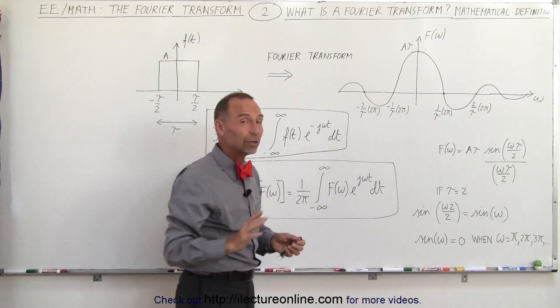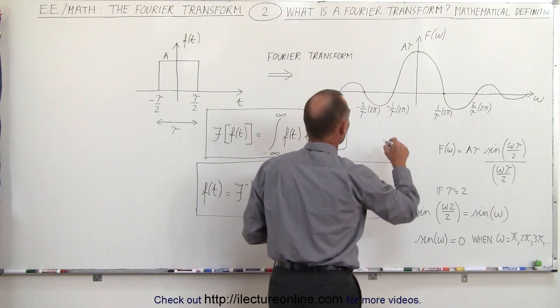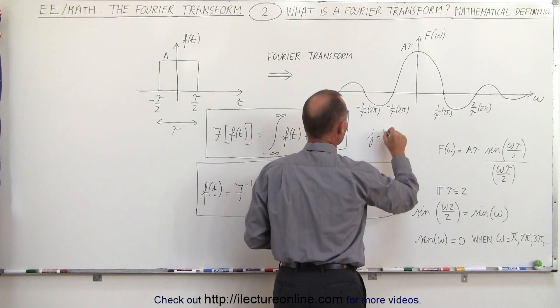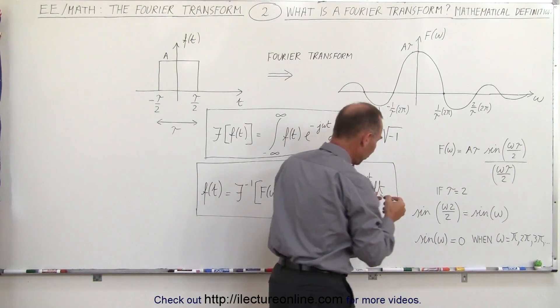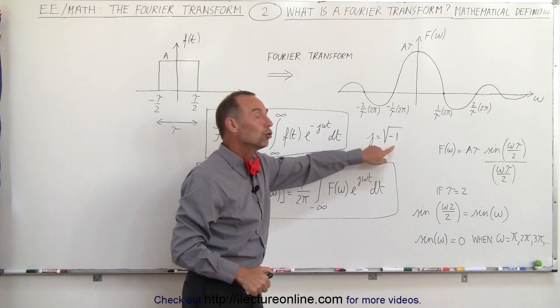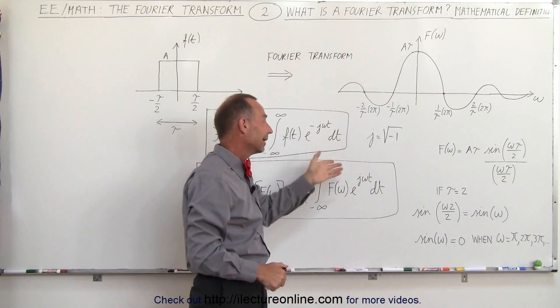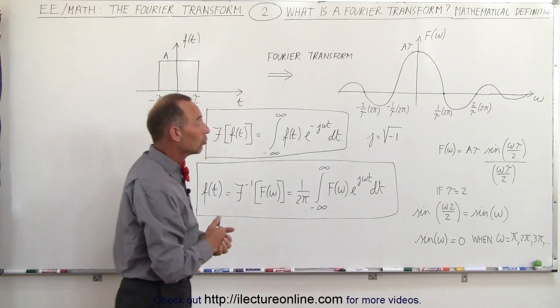Remember j is equal to the square root of negative 1 so we like to use j as being equal to the square root of negative 1 and of course in algebra you tend to see the i used for that particular value but here in electronic circuitry they like to use j.